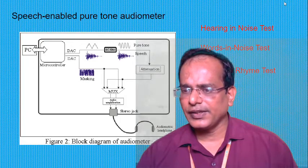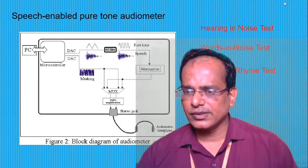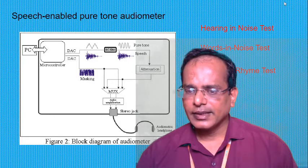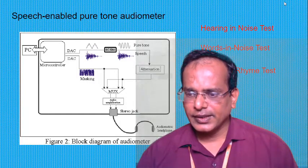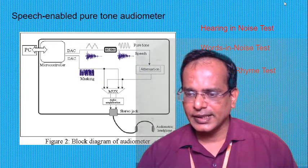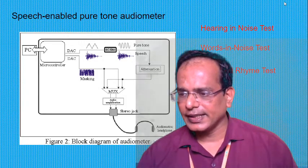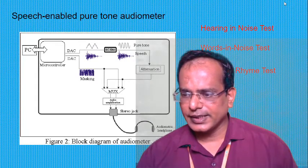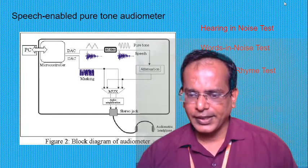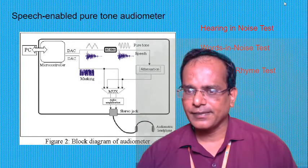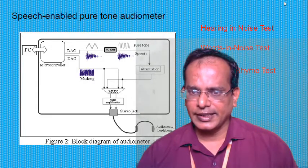There is also a high-frequency version of the test that covers frequencies from 8000 Hz to 16,000 Hz, which may be used in special circumstances. Hearing loss thresholds are determined on a standard set of frequencies from 125 Hz to 8 kHz. The application can also integrate functions for testing the perception of separate sounds and intelligibility under various acoustic conditions.